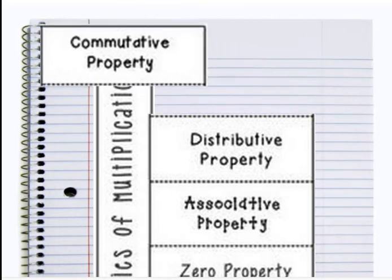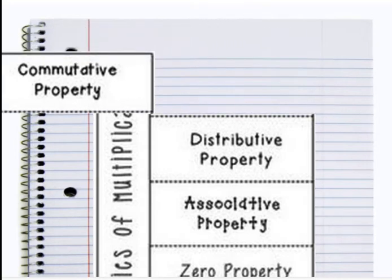So the commutative property, if you remember, if you flip up your tab so you can write underneath there, the commutative property is when we have two numbers, A and B, and they decide to switch places. The commutative property will work for addition, but also for multiplication.